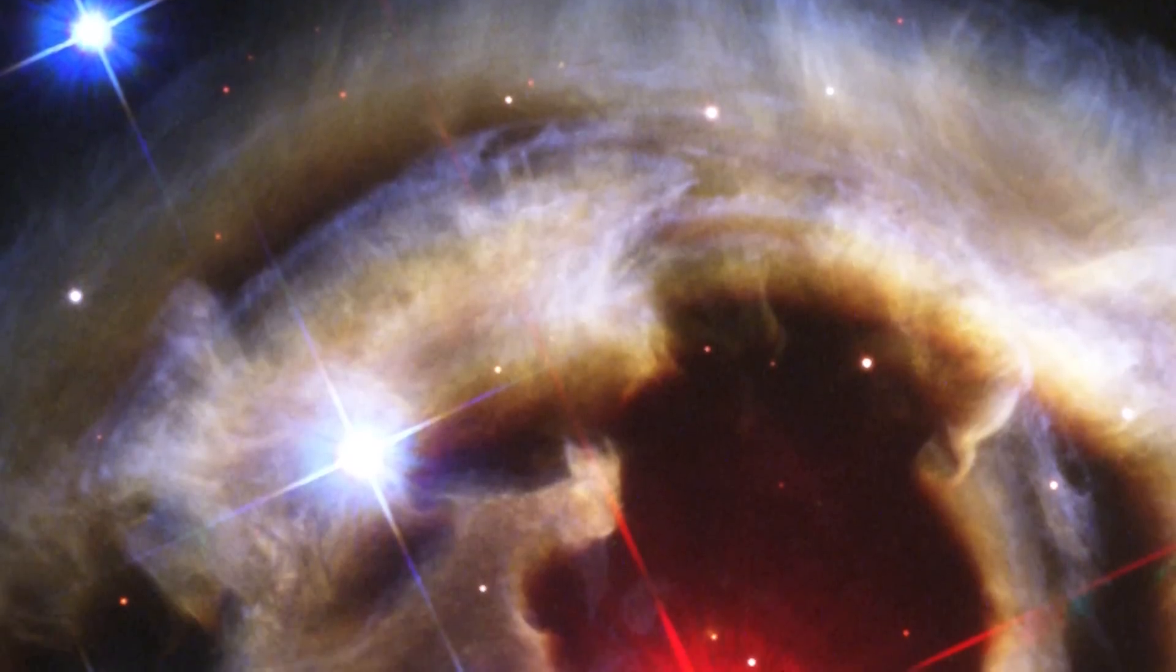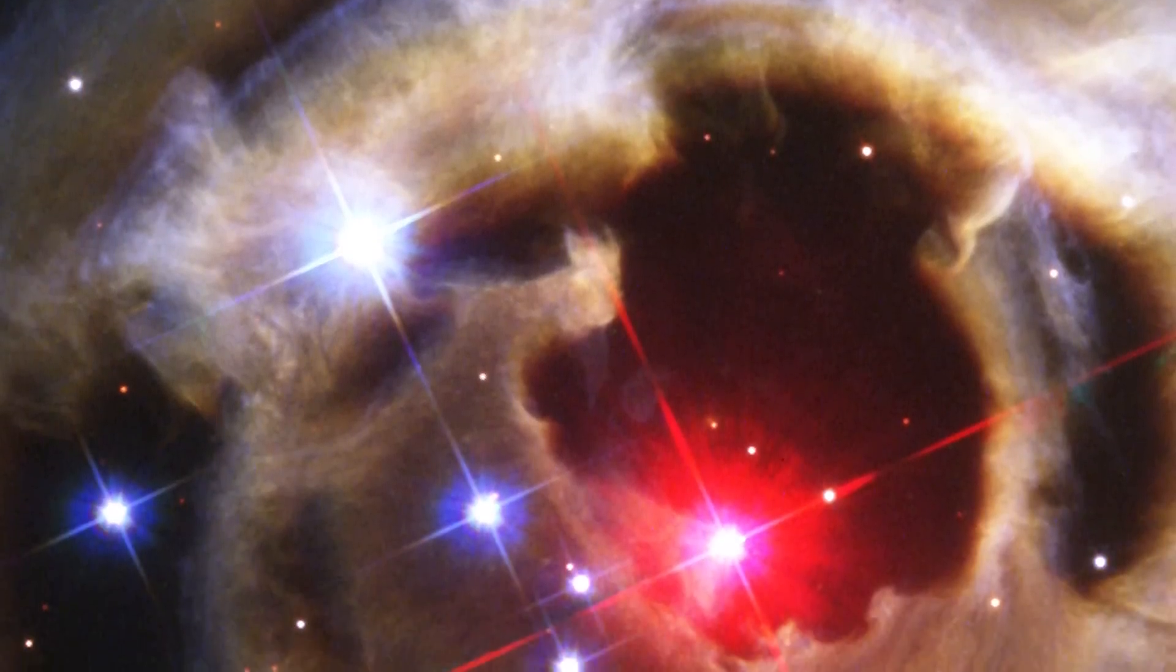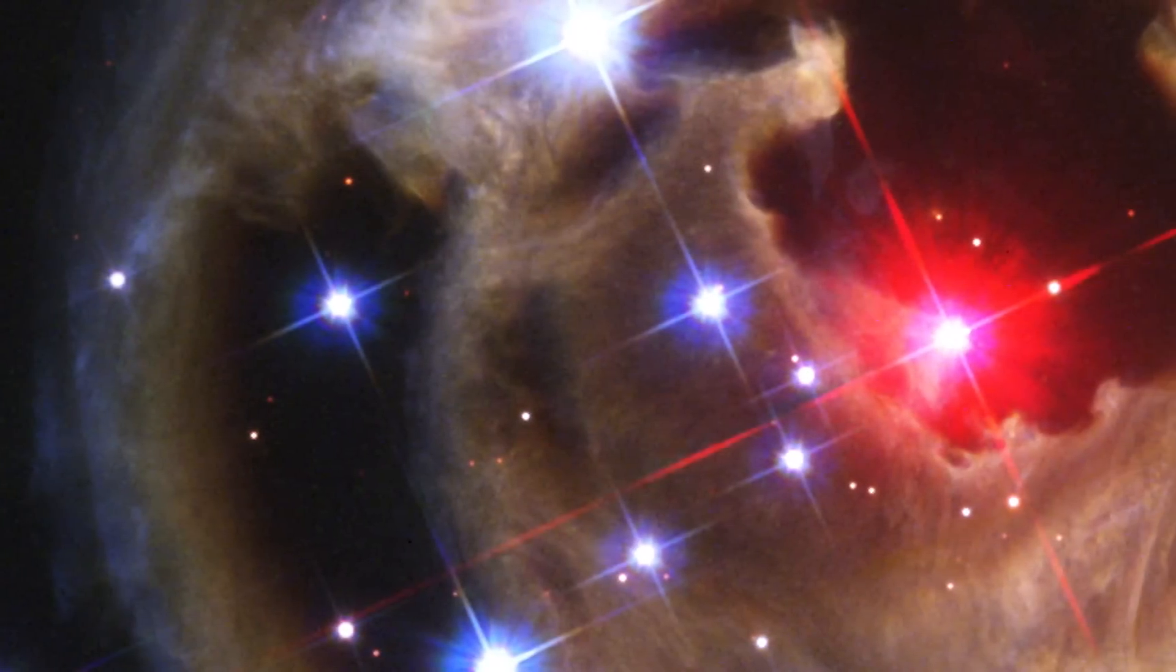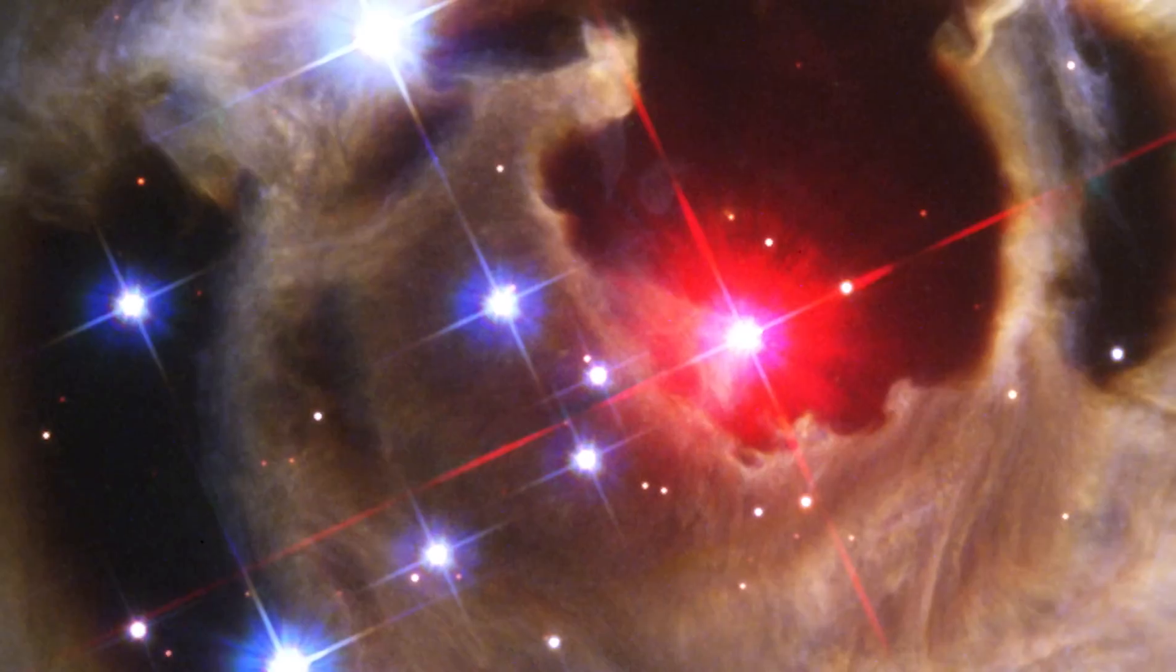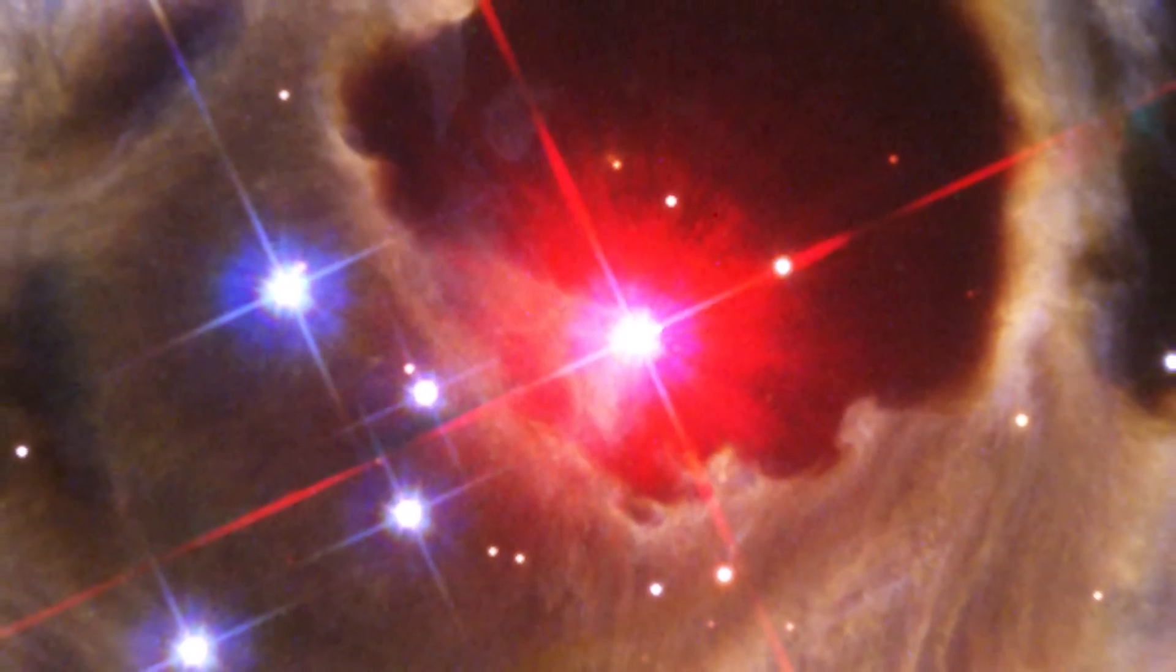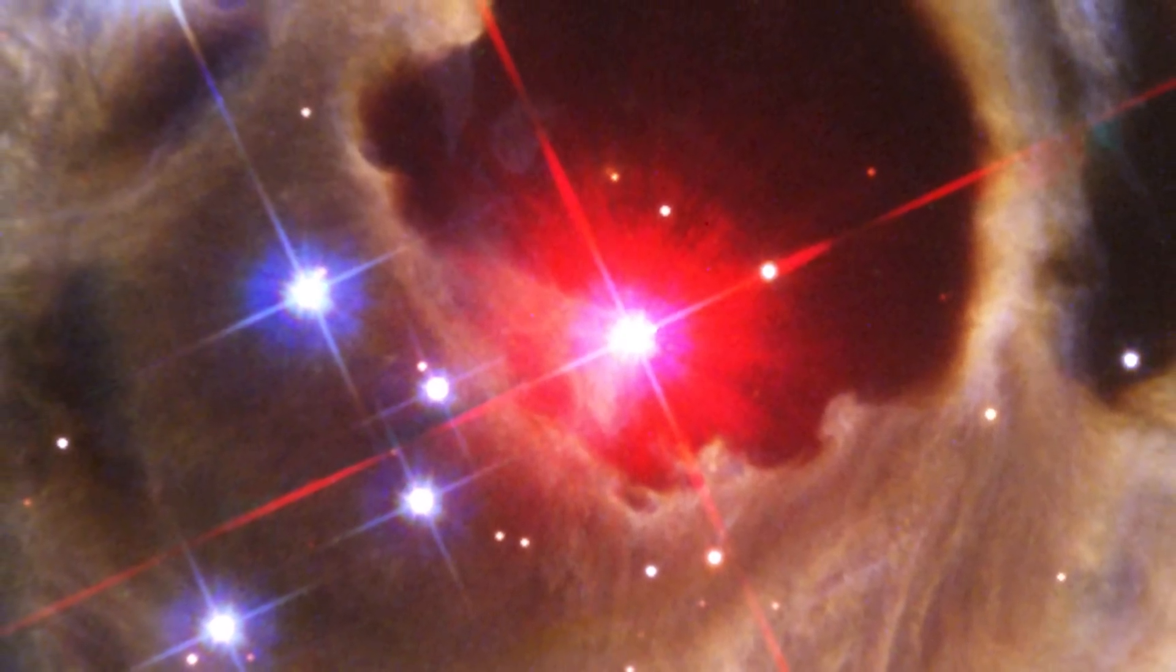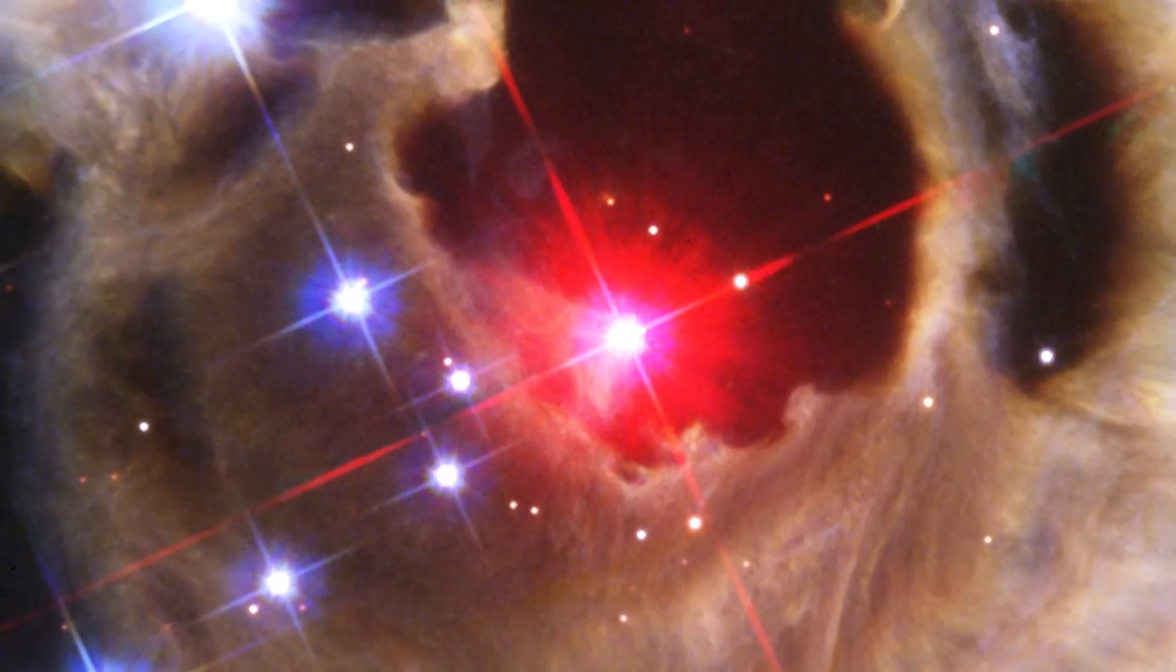Oddly enough, however, V838 Monocerotis did not expel its outer layers. Instead, it grew enormously in size, with its surface temperature dropping to temperatures not much hotter than a light bulb. Growing so large without losing the outer layers is very unusual and completely unlike an ordinary nova explosion.